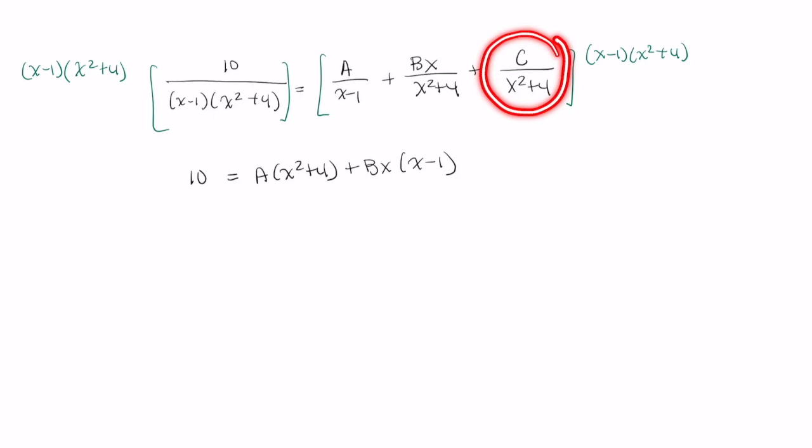we have C divided by x squared plus 4 and we're going to multiply by this expression here. There is an x squared plus 4 in the denominator and this one. So you'll just end up multiplying C times x minus 1. Now, go ahead and take a moment and clean this up.